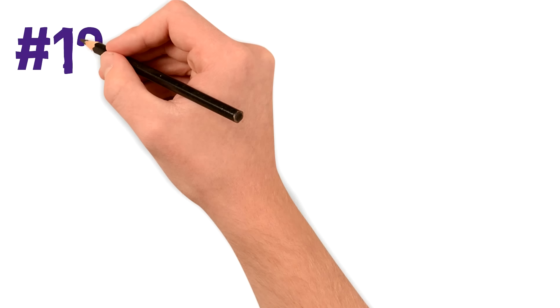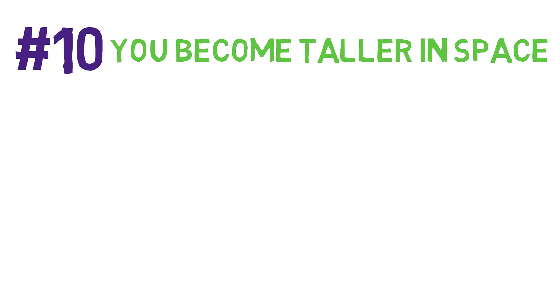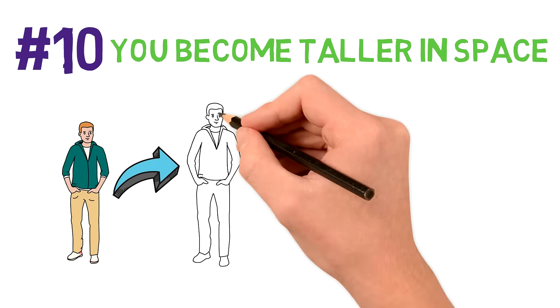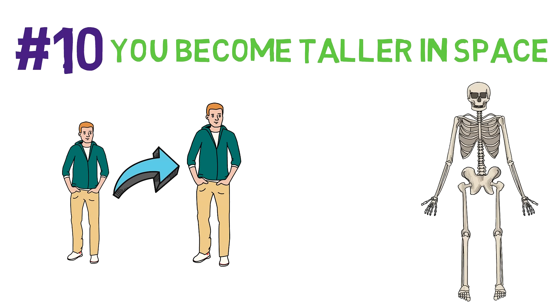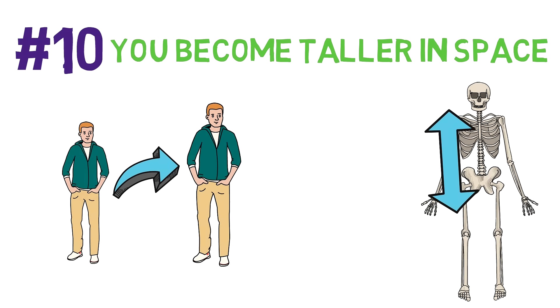Number 11. You become taller in space. Spending time in a zero-g environment causes the spine to stretch. On Earth, gravity keeps the vertebrae in place by constantly pushing them together, but in space, without gravity, the vertebrae will naturally expand a little, making you taller. Essentially, in space, gravity isn't pulling you down like it is on Earth, so your spine straightens out, and therefore, you can grow as much as 5 centimeters taller.